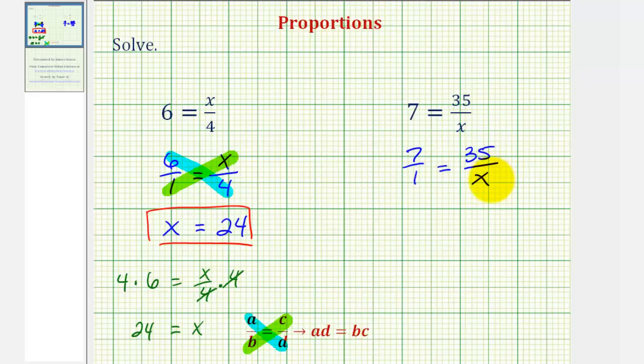So for this example, we'll find this cross product first. Seven times x must equal one times 35. Well, seven times x is equal to seven x. One times 35 is equal to 35.